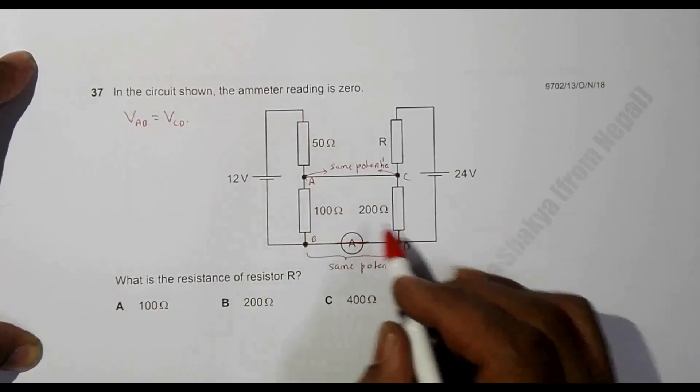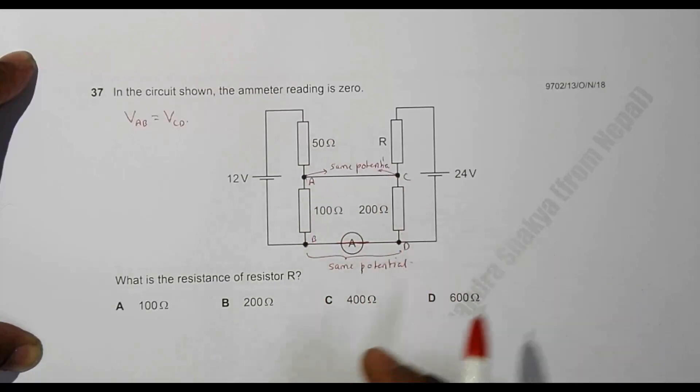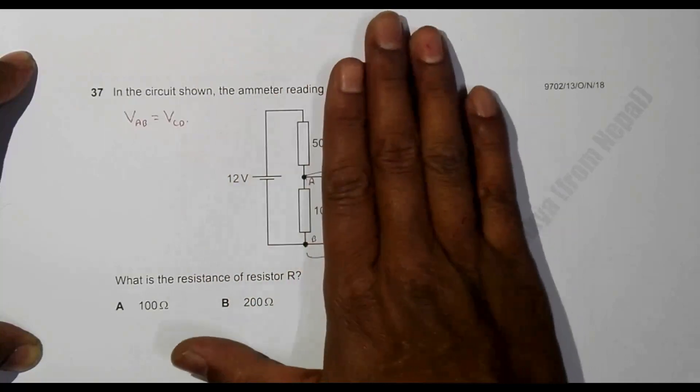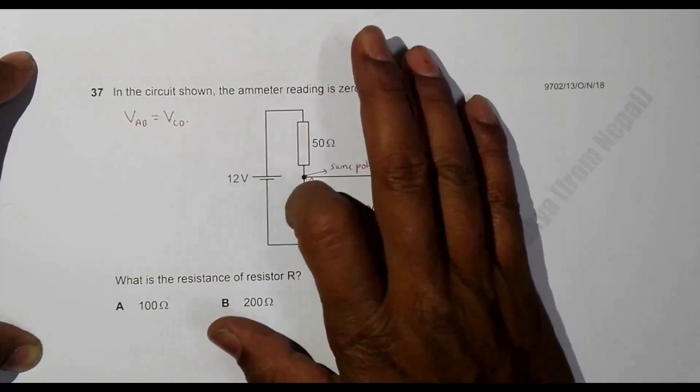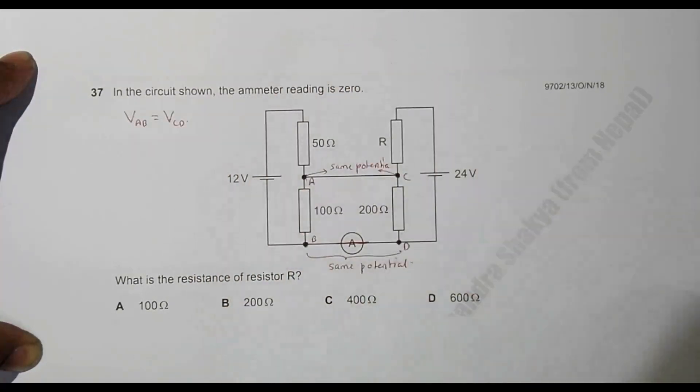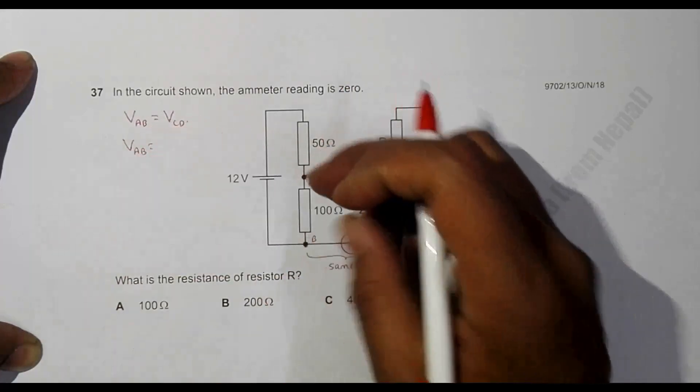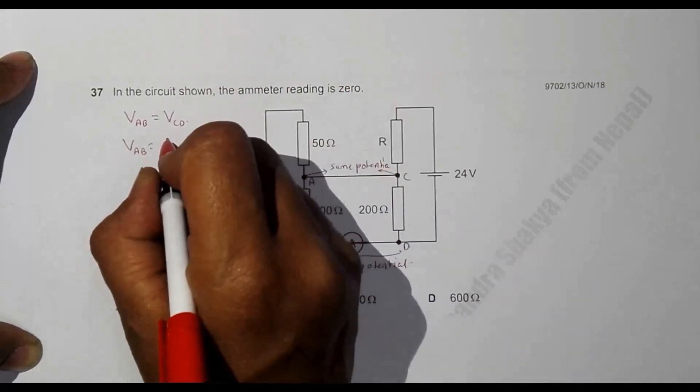For this circuit, the two resistors form a voltage divider circuit. So VAB will be equal to the resistance here, which is 100, divided by the total resistance, which is 100 plus 50, into the total EMF, which is 12 volts.